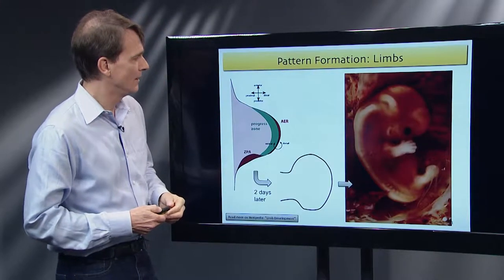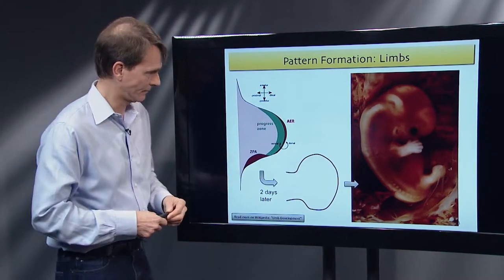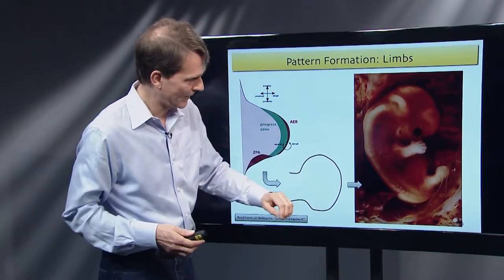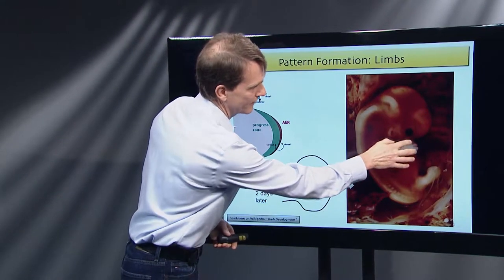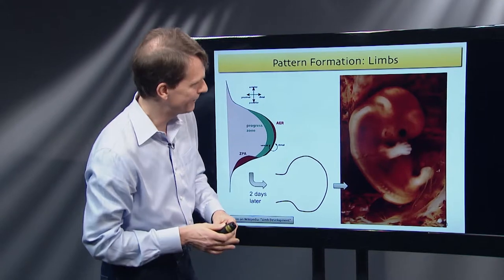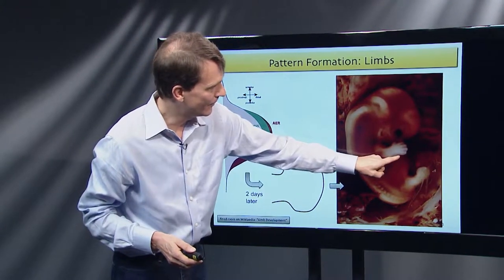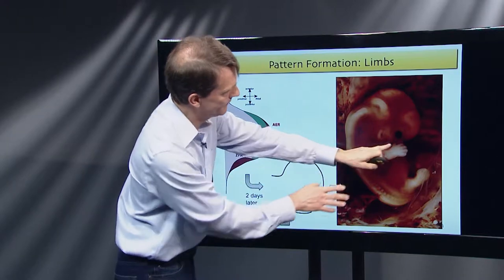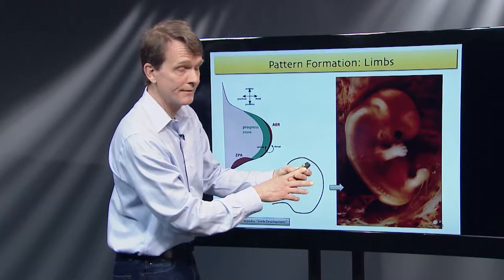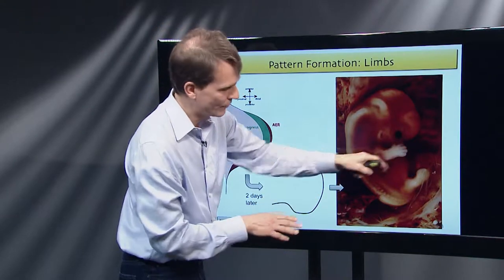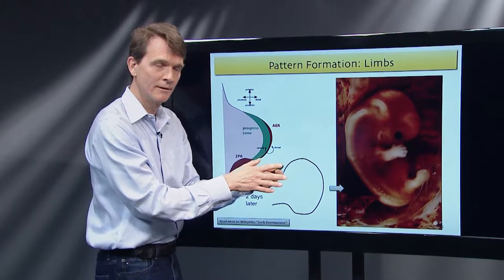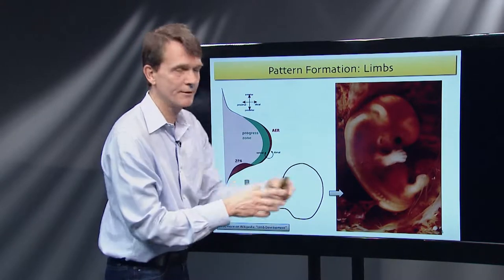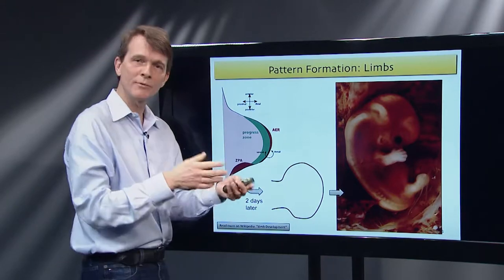Here's an example of pattern formation and signaling in a human embryo where the limb is beginning to form. There's still tissue between the fingers at this early stage. Where there will be fingers, cells condense and become denser. In between, there's a process called programmed cell death — because you don't want webs between your fingers. The cells sitting between the fingers commit suicide. It's programmed — that's one of the pattern formation mechanisms.